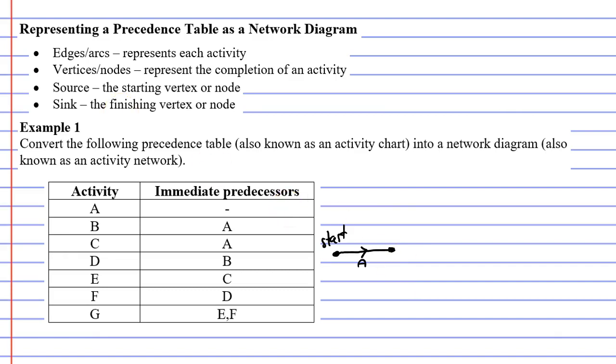This vertex also represents what is known as an event. An event represents the completion of an activity. Now that activity A has completed, we can carry on with activities B and C.